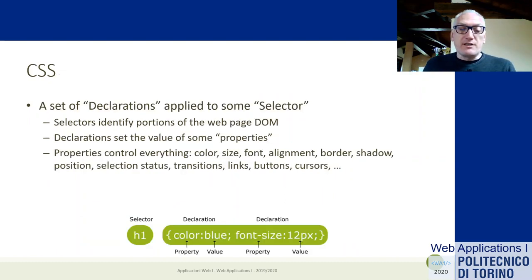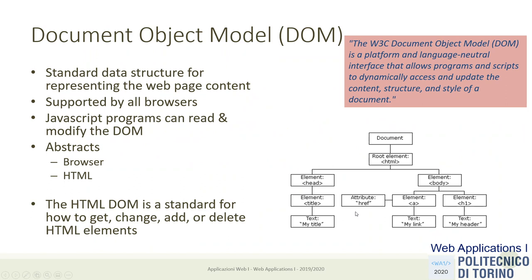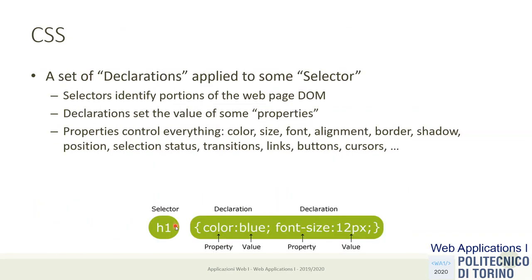A selector is an expression in a specific language that matches one or more nodes in the DOM tree. For example, 'h1' is a selector that matches all the DOM elements of type h1. For all the elements matched by the selector, the declarations can attribute some values to some properties. These properties are properties of the DOM nodes — every DOM node has more than 100 properties controlling the color, size, alignment, margins, border radius, how they react to mouse events, and so on.